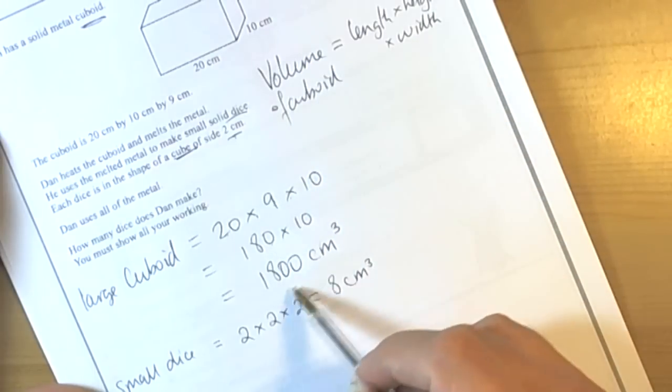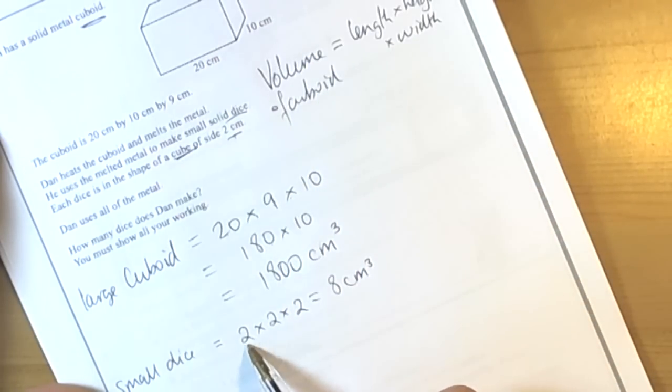Similar formula to the cuboid, it's just that all the lengths are the same, so we just multiply the length by the height by the width.